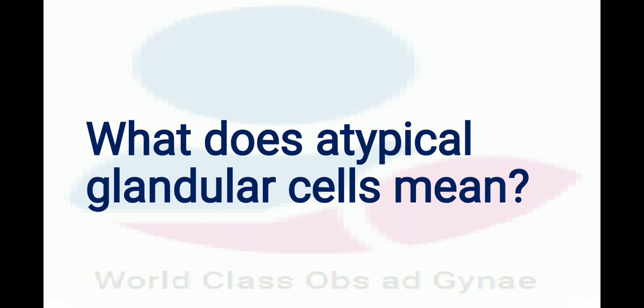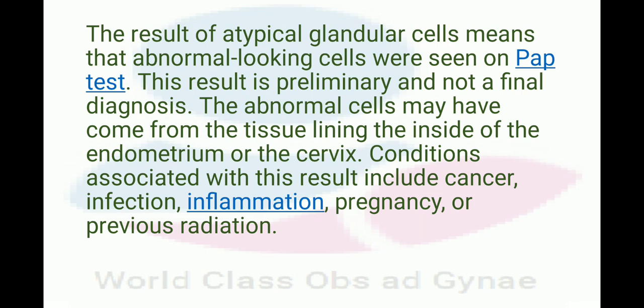The first thing that is very important to understand is what atypical glandular cells mean. The results of atypical glandular cells mean that abnormal-looking cells were seen on the pap smear test. This result is preliminary and not a final diagnosis. The abnormal cells may have come from the tissue lining the inside of the endometrium or the cervix, and conditions associated with this result include the following.